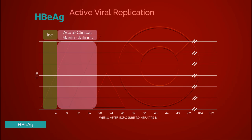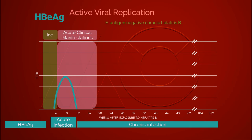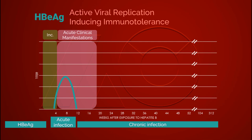Hepatitis B e antigen usually lasts for a short period of time in acute infection. In chronic hepatitis B infection, hepatitis B e antigen may be present, signifying ongoing viral replication. However, absence of hepatitis B e antigen is possible in chronic infection — it could indicate an e antigen-negative chronic hepatitis B or simply a state of low viral replication. Hepatitis B e antigen is clinically significant in two ways: it signifies active replication of the virus, and it plays a role in inducing immunotolerance to the virus.